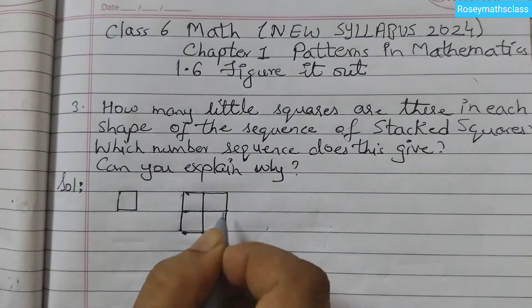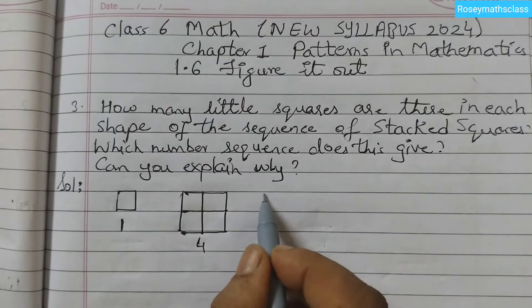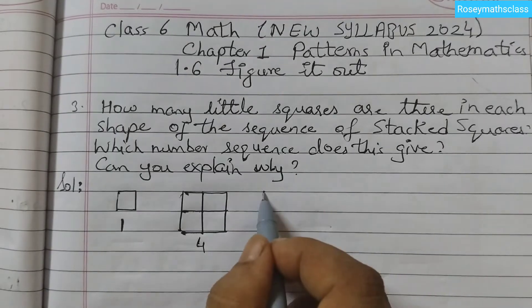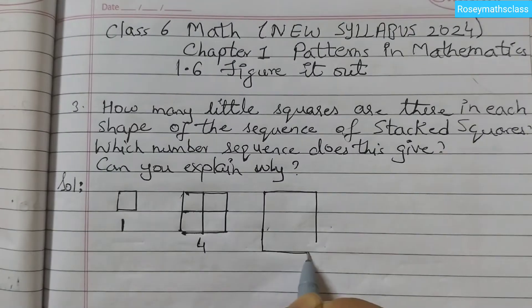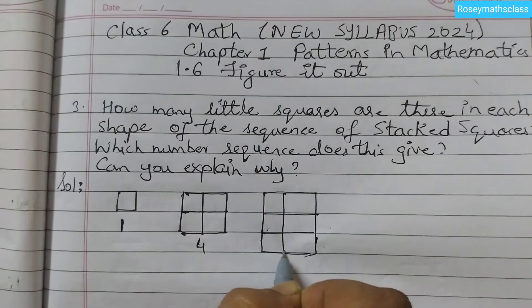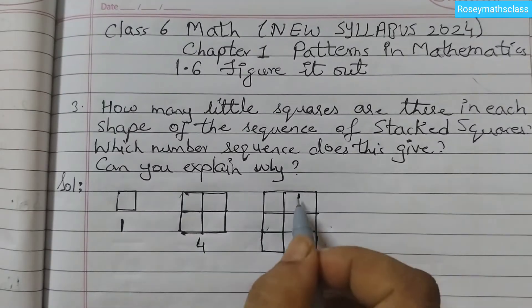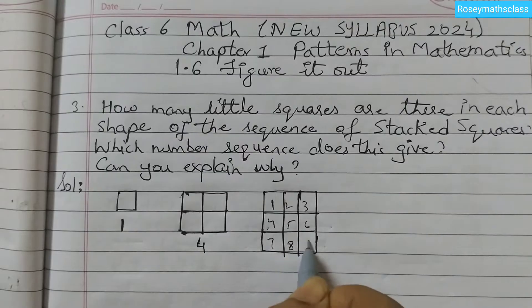You have to draw 1, 2, 3, 4. Here we have one square. Next shape is with three squares in each row and each column. So we can draw like this. These are all squares. So we have 1, 2, 3, 4, 5, 6, 7, 8, 9.